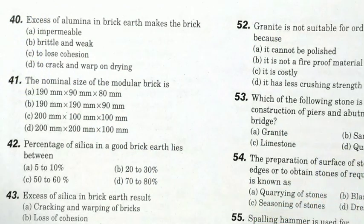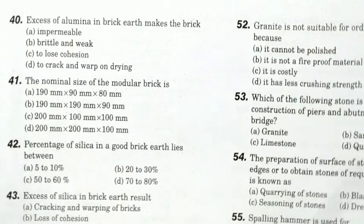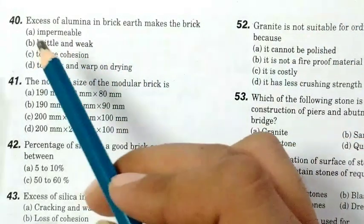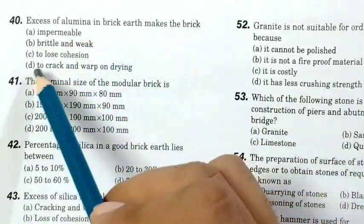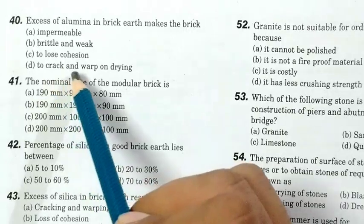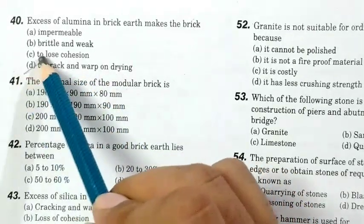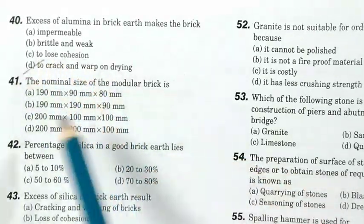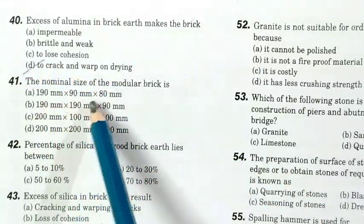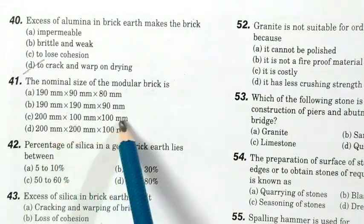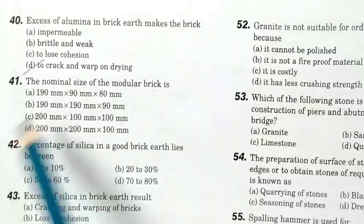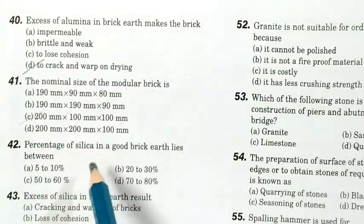Hey guys, this is the first video on our channel Arc Prep, and we are going to upload important questions for B.Arch on a daily basis. Excess of alumina in brick earth makes the brick dry, crack, and warp on drawing. The nominal size of modular brick is 200mm x 200mm x 200mm.